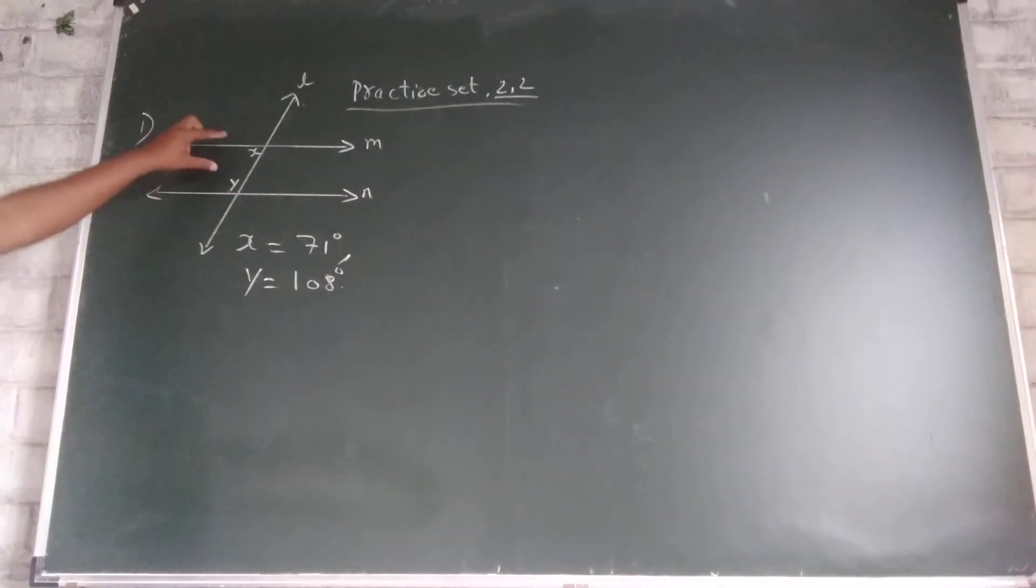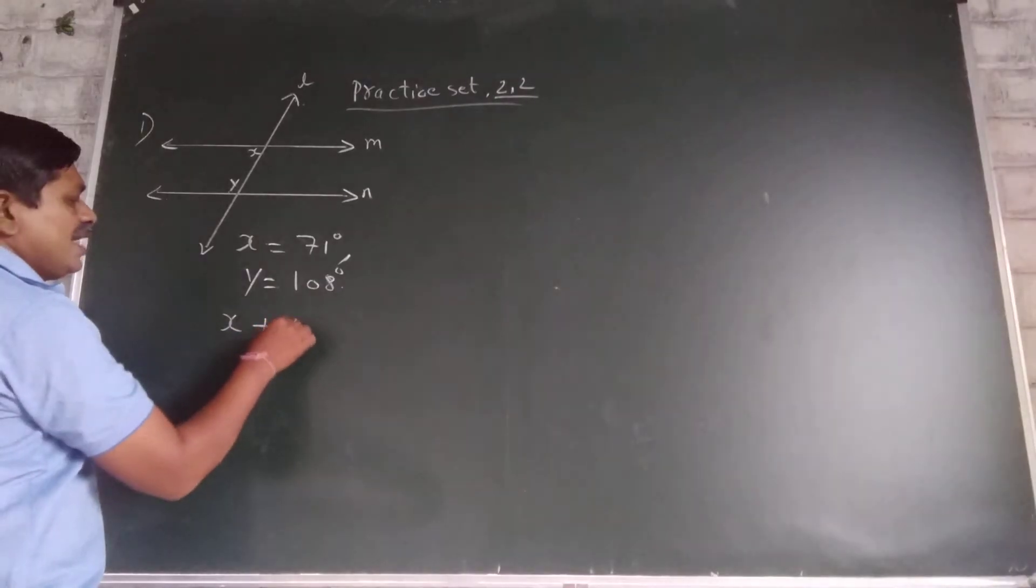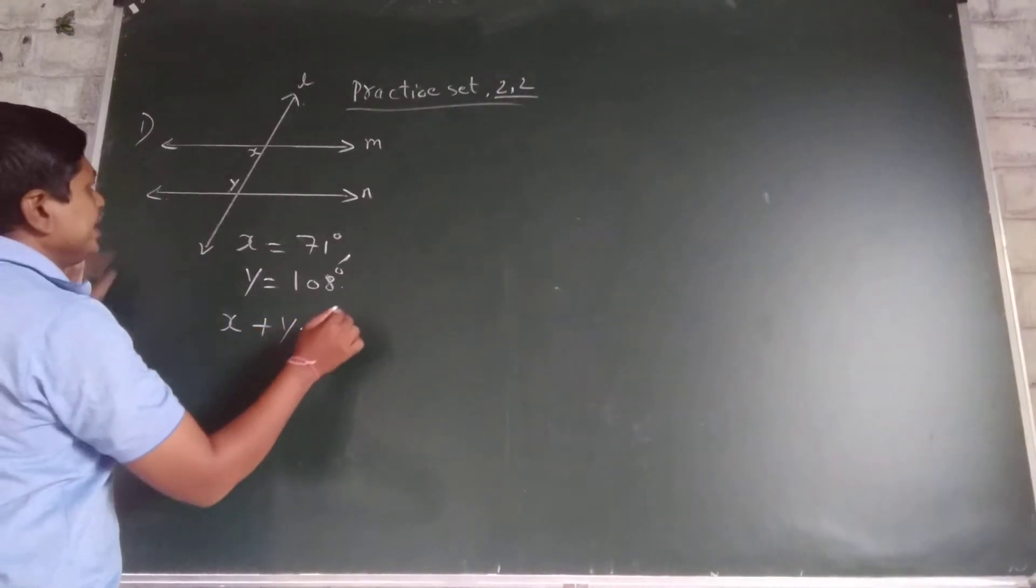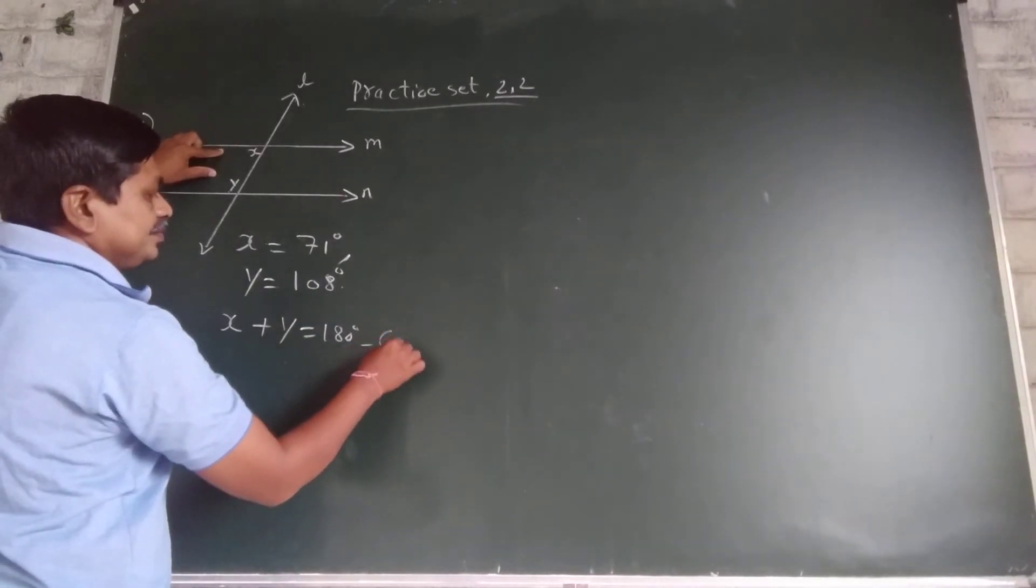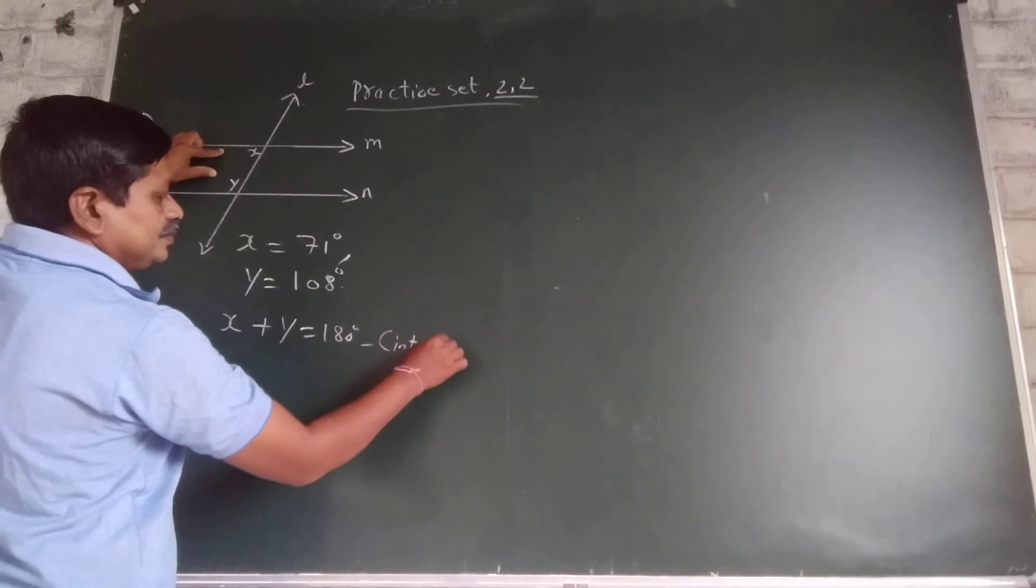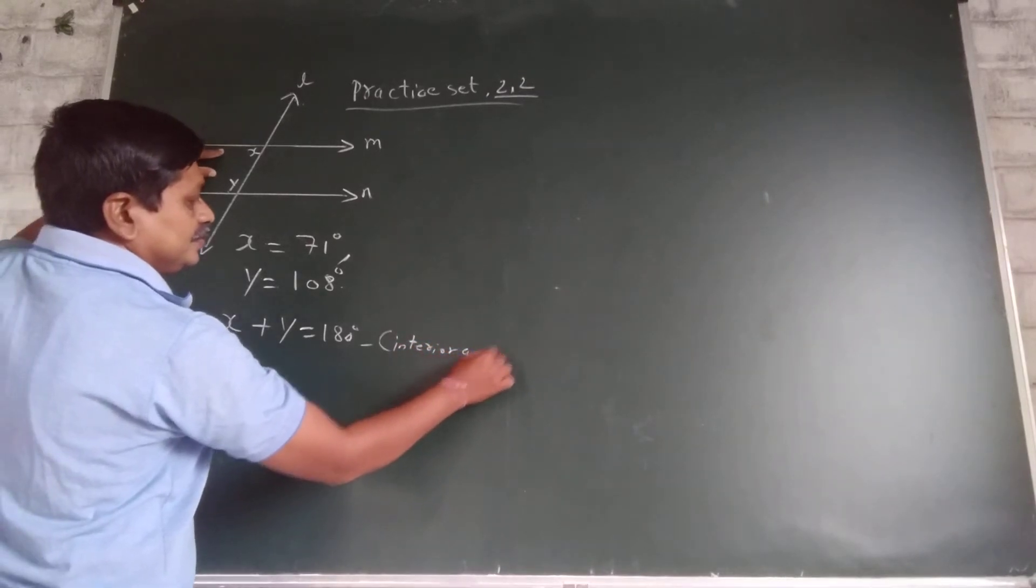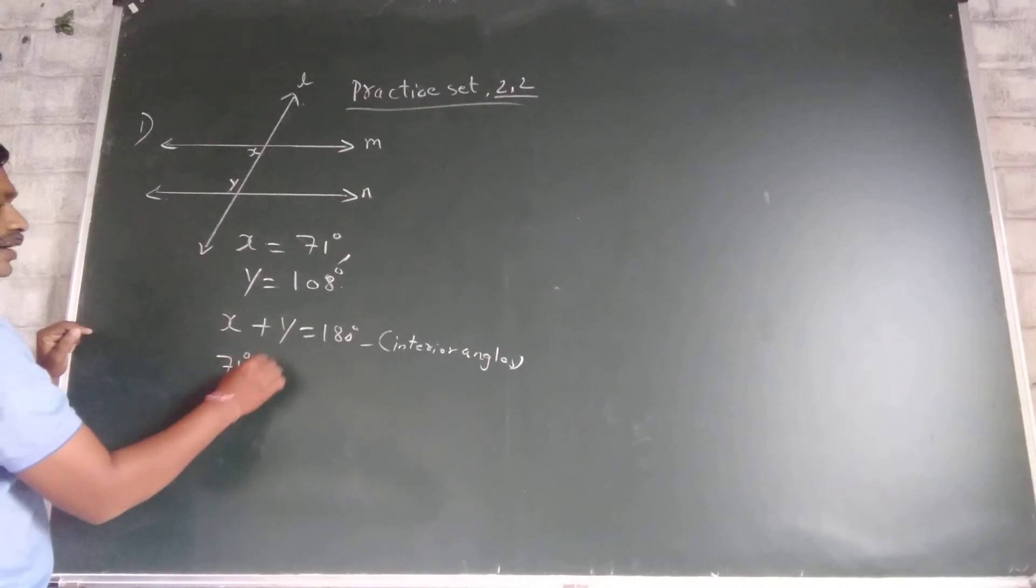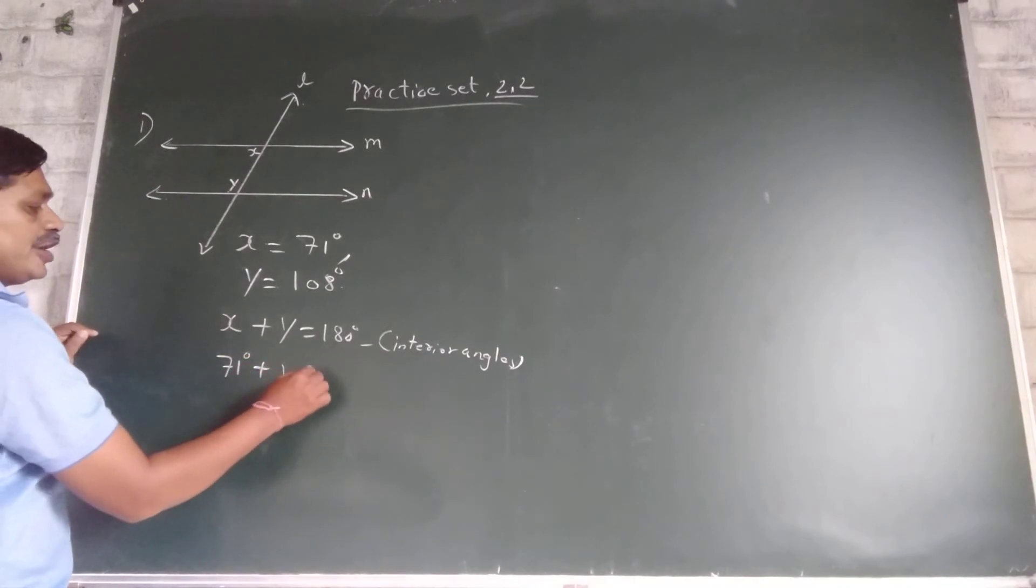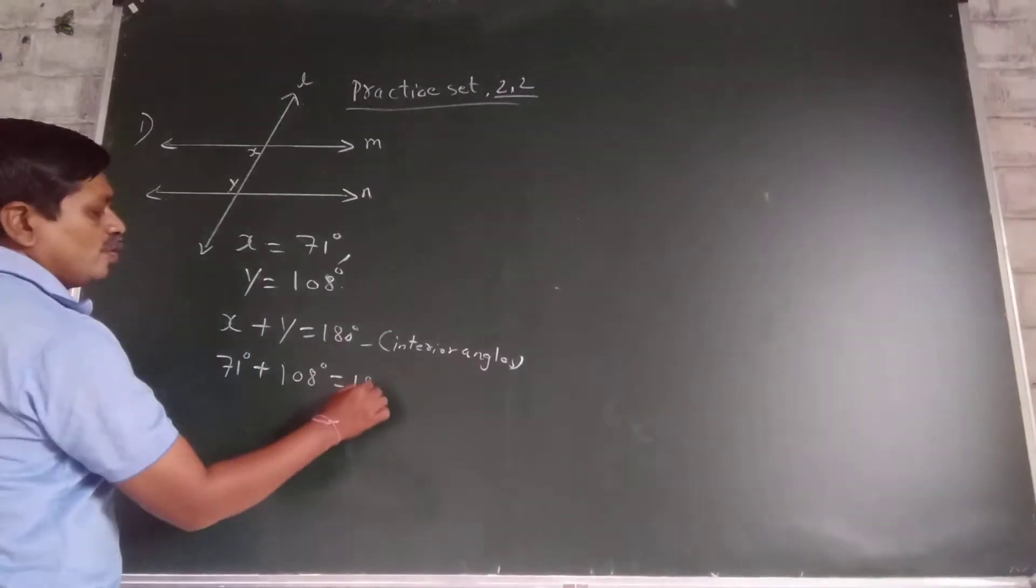These two angles are exterior angles, so X plus Y equal to 180. Linear interior angle. X is 71 and Y is 108 equal to 180 degrees.